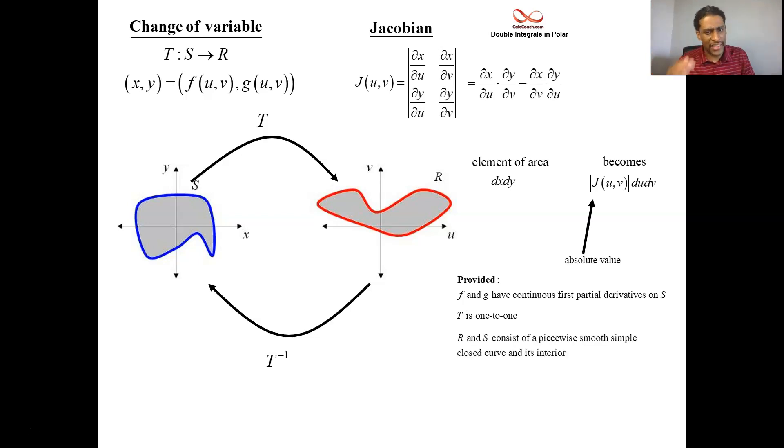These regions are an S. They need to consist of, maybe they won't be smooth themselves, but at least if they consist of piecewise smooth, simple, closed curve and the interior. Now, the Jacobian can't be zero. And if so, then what you do is you replace all your x's and y's with the function f and the function g. And then you replace dA or dx dy or dy dx with the Jacobian, absolute value of the Jacobian, times du dv.